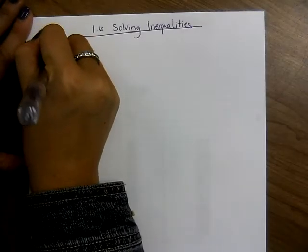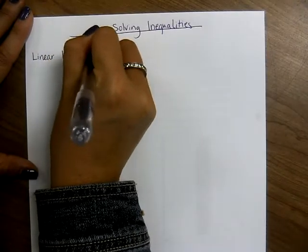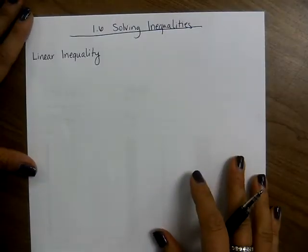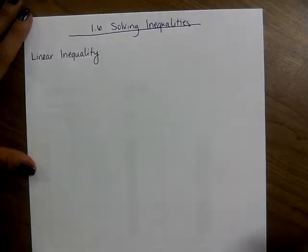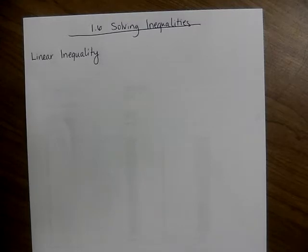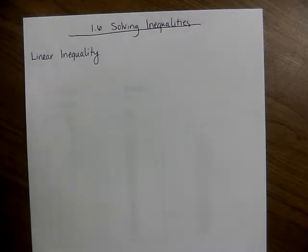The first is a linear inequality. Remember, we talked about using parentheses and brackets and what they replaced — when it was an open circle, we would use a parenthesis; when it was a closed circle, we would use a bracket. We're going to continue to talk about this.